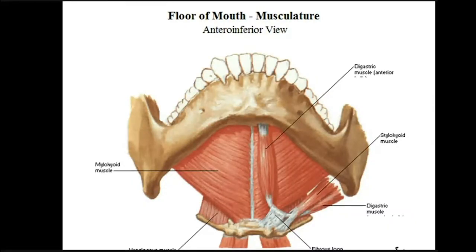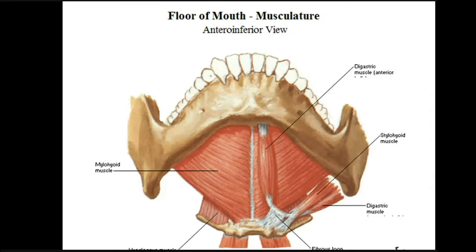We will continue with the floor of the oral cavity. The floor of the oral cavity is formed of a single muscle on each side, which is called mylohyoid. Looking at this slide, this is the medial surface of the body of the mandible and this is the inferior surface. This is the base of the mandible, the inferior border, and this is the anterior surface. The floor is formed by two mylohyoid muscles, one on each side.